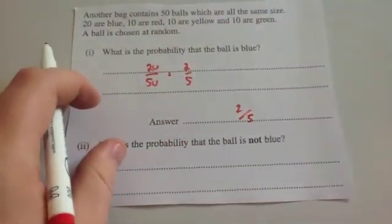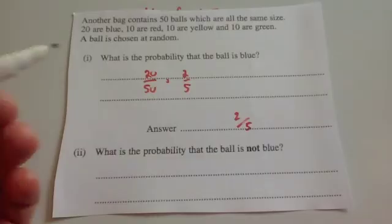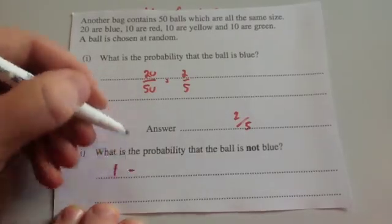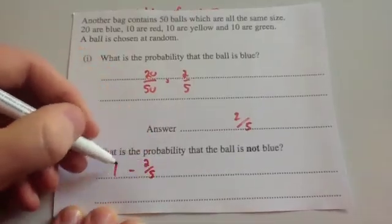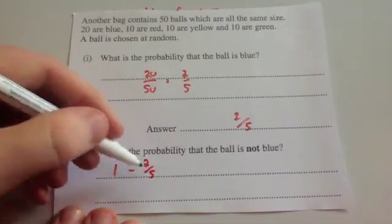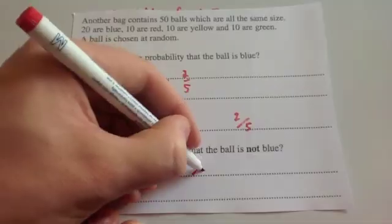In essence, what's the probability that the ball is not blue? So there's two ways you can do this. You could do 1, subtract the probability of blue. So that's 2 fifths. And a whole, which is 5 fifths, to take away 2 fifths, would be 3 fifths. So that's one way to do it.